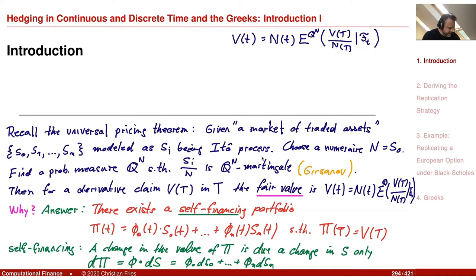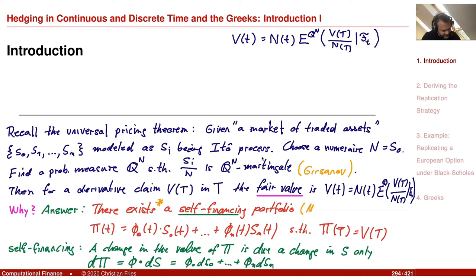A change in the value of the portfolio P is due to a change in S only: dP = phi · dS, which is a scalar product — phi_0 dS_0 plus through phi_N dS_N. So if the portfolio is self-financing, it means I just rearrange it without putting anything in. If the value equals the derivative at the final time, to reconstruct the derivative's value I just check what it costs to set up this portfolio initially — this is a replication portfolio.